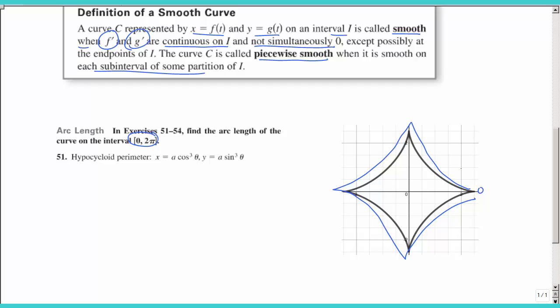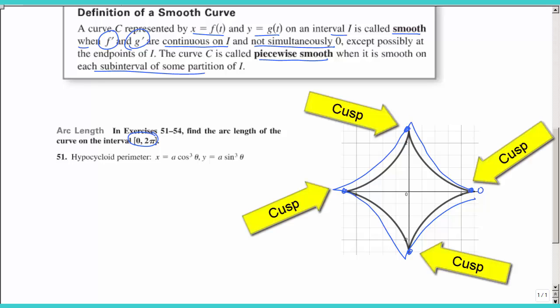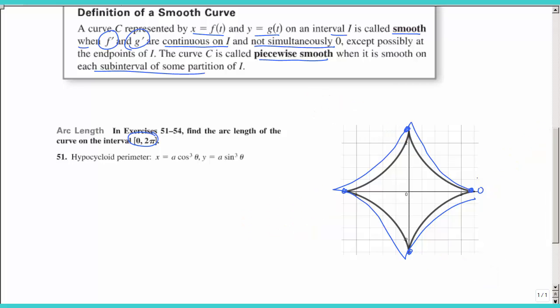Hopefully you can see that this is not going to be a smooth curve. We have some cusps along the way, and therefore your derivative is going to be undefined at different places between zero and two pi. Let's look at that.